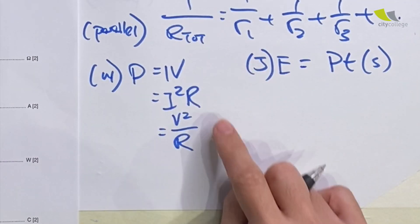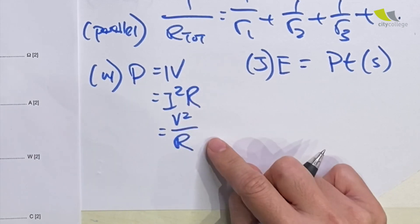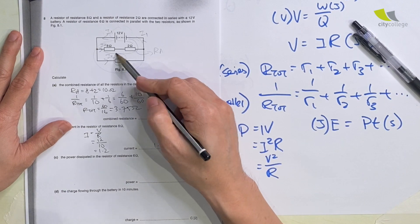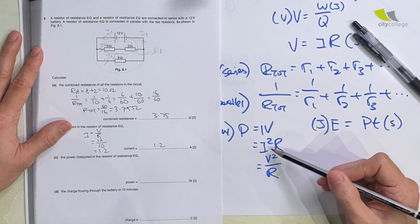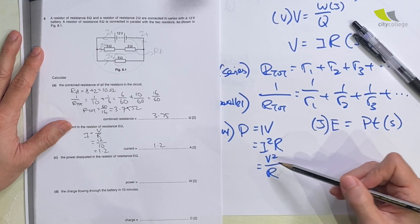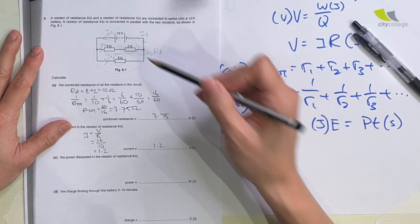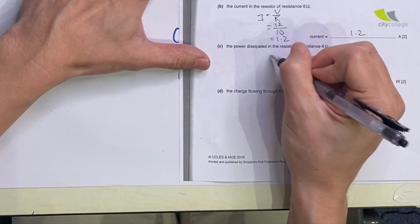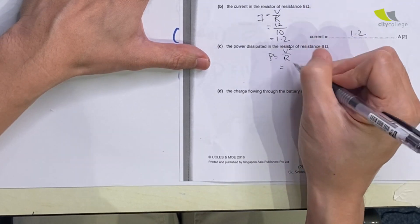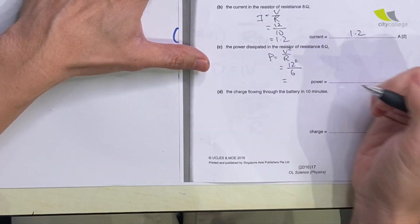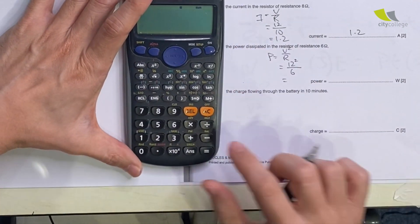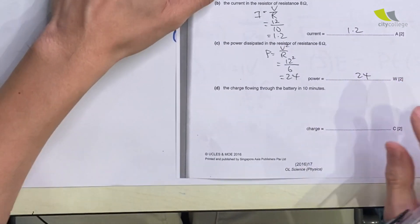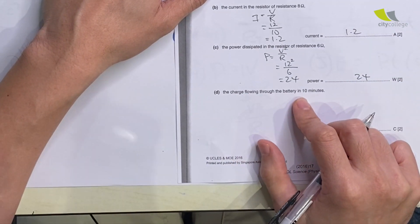For power dissipated in the 6-ohm resistance: I have three power formulas — P = IV, P = I²R, and P = V²/R. I try to use values already given. The PD of 12 V is directly across the 6-ohm resistor, so P = V²/R = 12² / 6 = 144/6 = 24 watts.